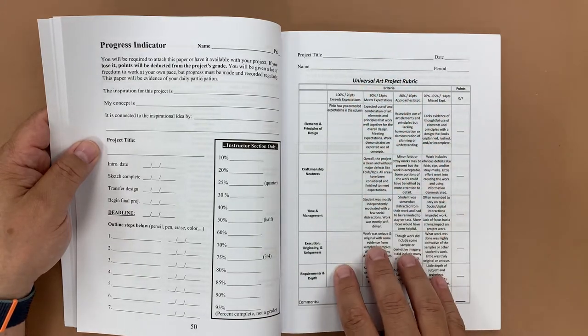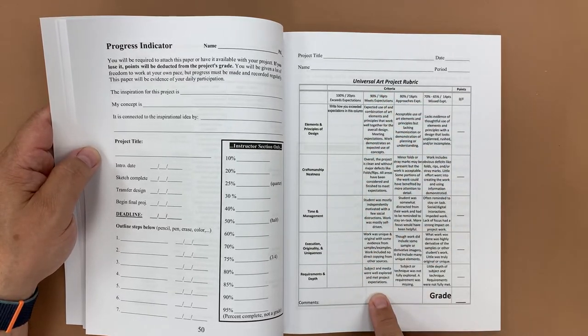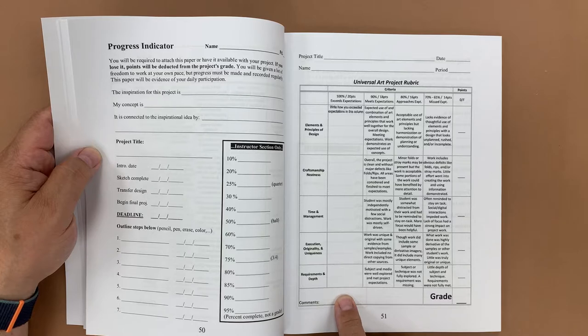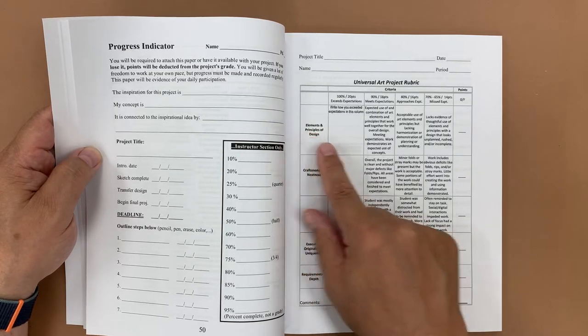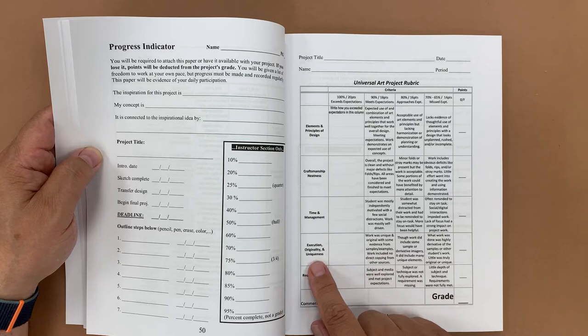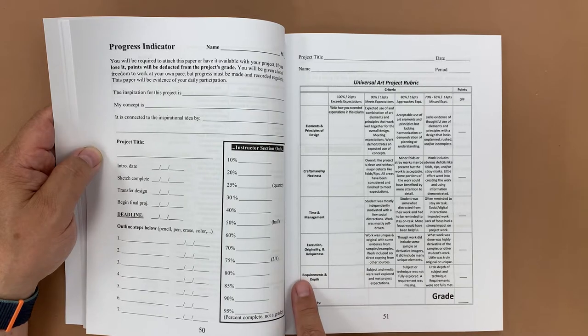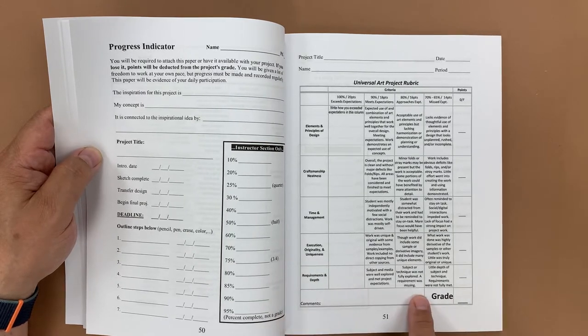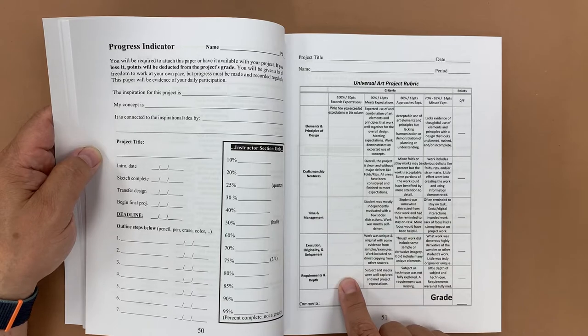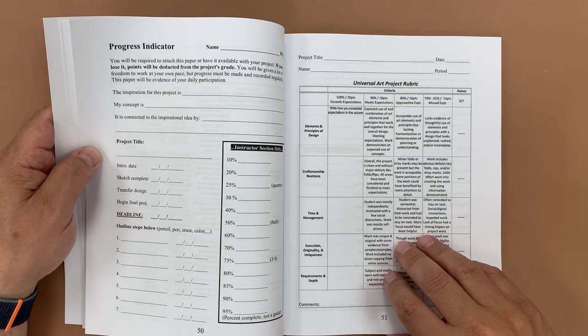The project rubrics are here, and these are my universal art project rubric. And the idea is that the 90 percent column is what I hope that they are achieving, and that if they feel like they're exceeding expectations, they have to write in how they exceeded those expectations. So how did you use additional elements or principles than what I was requiring, so they could write that in, how they covered craftsmanship and neatness, time and management, execution originality and uniqueness, and then requirements and depth. And usually this is where I ask them to make personal connections to the work that they're creating. I can leave some comments in here. The way that I do this is I have students underline the statements that they feel are true or to write in how they exceeded, and then I grade it with them and I circle the thing that I agree or disagree, and then we assess a grade for that particular project.